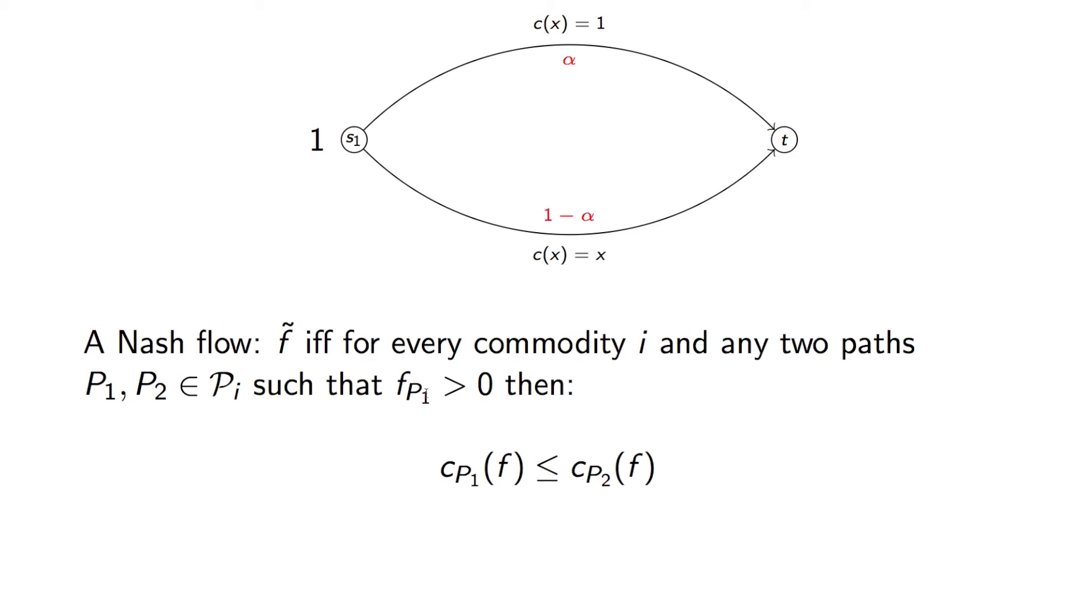So as long as FP1 is actually used, then the cost of FP1 must be less than or equal to the cost of any other path. And what in this instance this basically means is that all used paths must have the same cost. And so here we can see that to do this, we would in fact have alpha equals 0. So everyone uses the bottom path at a cost of 1, and so our Nash flow would have a value of 0 and 1.